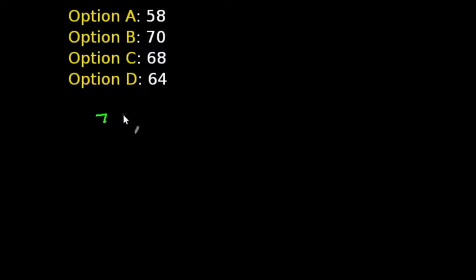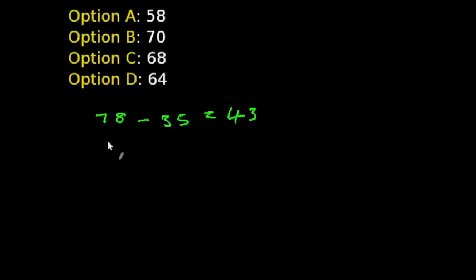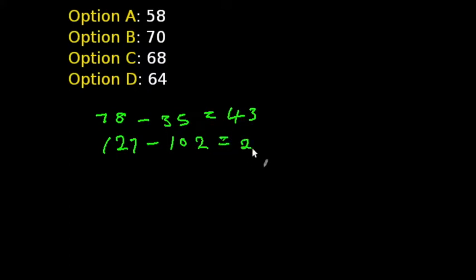Let's see how we can solve this. Felix read through pages 35 to 78, so 78 minus 35 gives us 43. He also read through pages 102 to 127, so 127 minus 102 gives us 25.